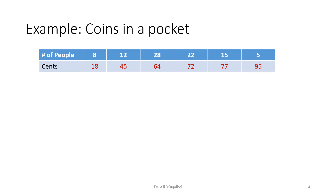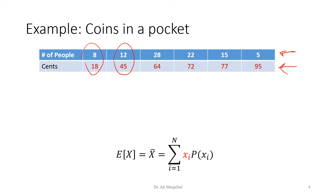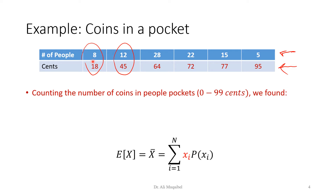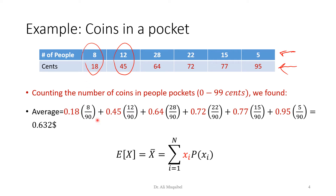Let's take an example: coins in pockets. The first row shows we picked a number of people and found how many coins — or what amount — they had in their pockets. We had 8 people with 18 cents, 12 people with 45 cents, and so on. The question is: what is the expected value of the number of cents in people's pockets? This is a discrete example, so we apply the discrete expectation formula and scale each value by its probability.